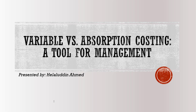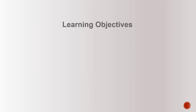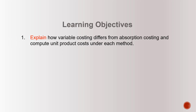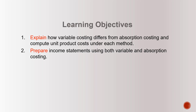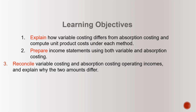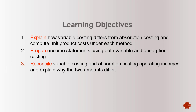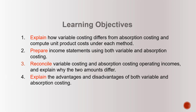Hello and welcome, this is Helauddin Ahmed. This video will explain two different costing approaches in management accounting: variable costing and absorption costing. This video will help students explain how variable costing differs from absorption costing, compute unit product cost under each method, and prepare income statements using both methods. Students can also reconcile variable costing and absorption costing operating incomes and explain why the two amounts differ.